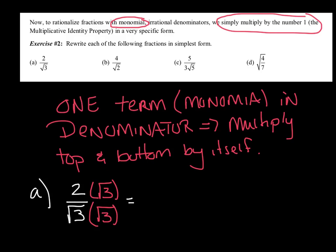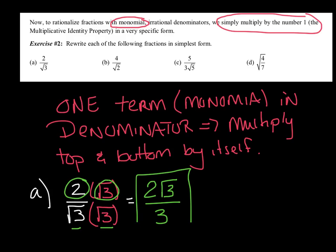So on top, the 2 is outside and the 3 is inside, so you can't combine them — that's just 2 radical 3. On the bottom, radical 3 times radical 3 is just 3. And now I have a simplified radical: 3 can't be broken down and there is no radical in the denominator.